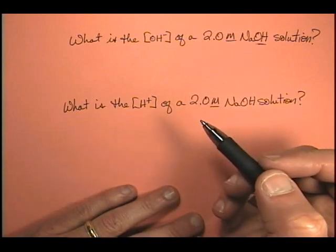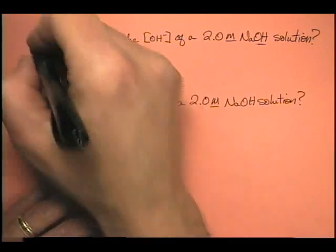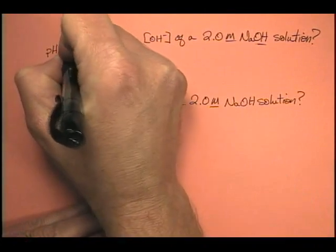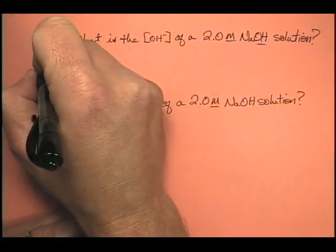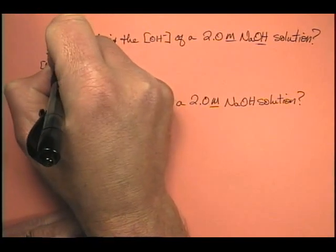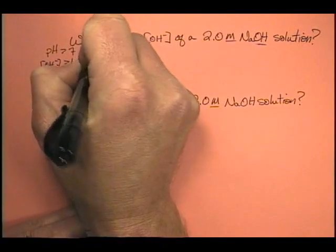Well, what do we know about bases? We know a couple of things. We know that their pHs are always greater than 7, and we know that their hydroxide ion concentration is always greater than 1.0 times 10 to the minus 7.